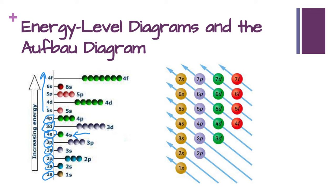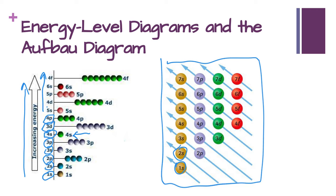We need to memorize how this filling order goes. One way that you can do that is by creating this diagram here, and this is pretty easy to recreate for yourself. You're going to write all the s's on top of each other, then do the same for the p's starting at two because there's no p's at one, then the same for the d's, and then the same for the f's.